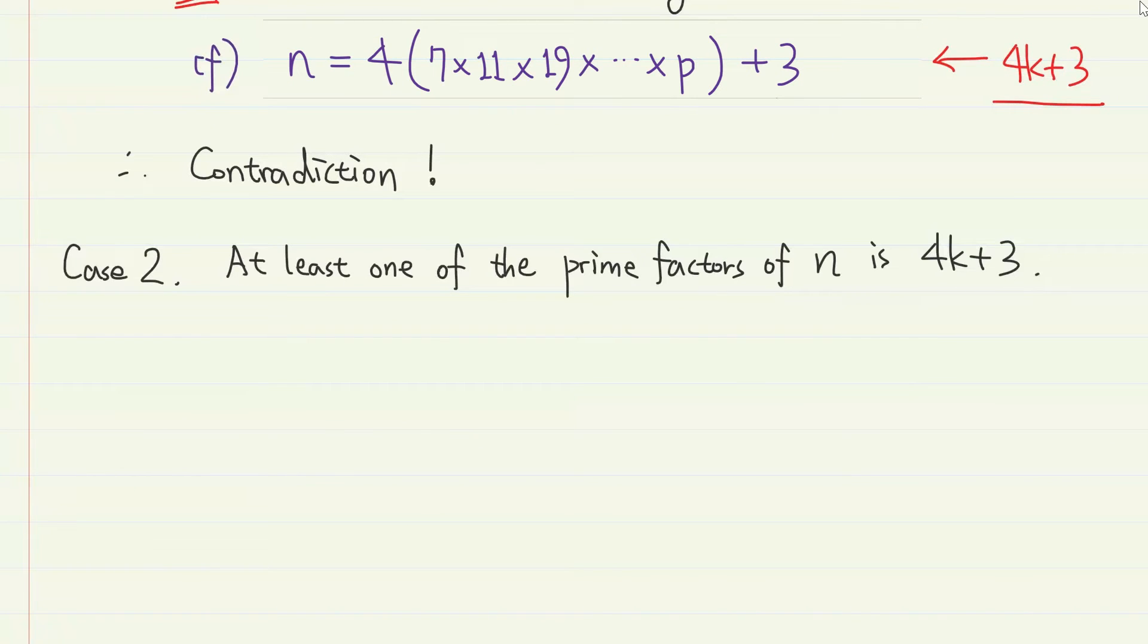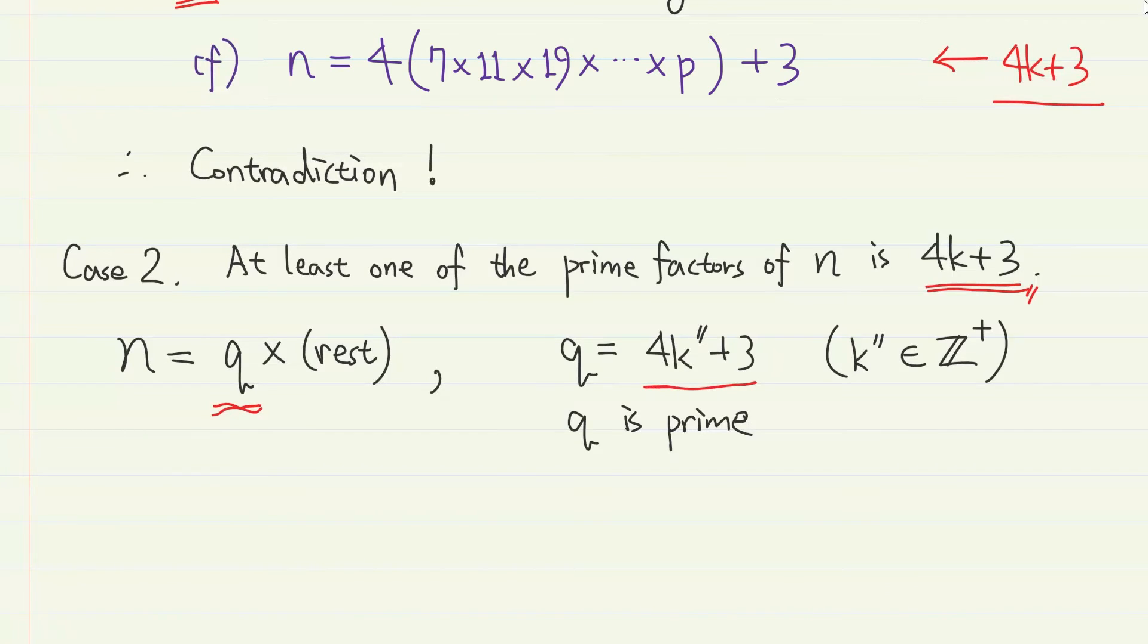At least one of the prime factors of n is of the form 4k plus 3. This means that n can be expressed as q times the rest, where this q is a prime factor of n that is of the form 4k plus 3, in here expressed as 4k double prime plus 3 for some positive integer k double prime. Then it is obvious that n is divisible by q, which I emphasize again, is a prime number of the form 4k plus 3.